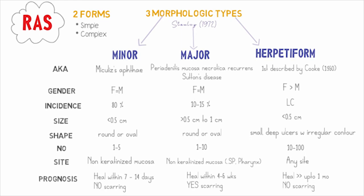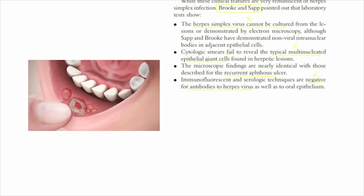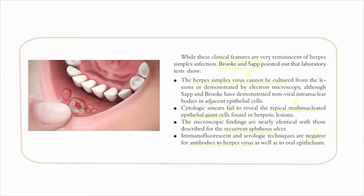Brooke and Sapp expanded our knowledge of recurrent herpetiform ulcers. They pointed out that this condition is in no way associated with herpes virus — it is only called so because the clinical features of both are very similar, but histologically they are not similar.